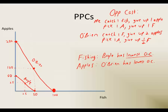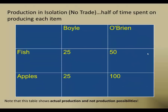So low opportunity cost means comparative advantage. Now let's look at a tabular representation of this information. If each of us are just doing our own thing — spending half the day fishing and half the day picking apples — you can look in this column and I can catch 25 fish and pick 25 apples in a day. And O'Brien is doing 50 fish and 100 apples. So these are just the points that we had on the PPF where we were producing.